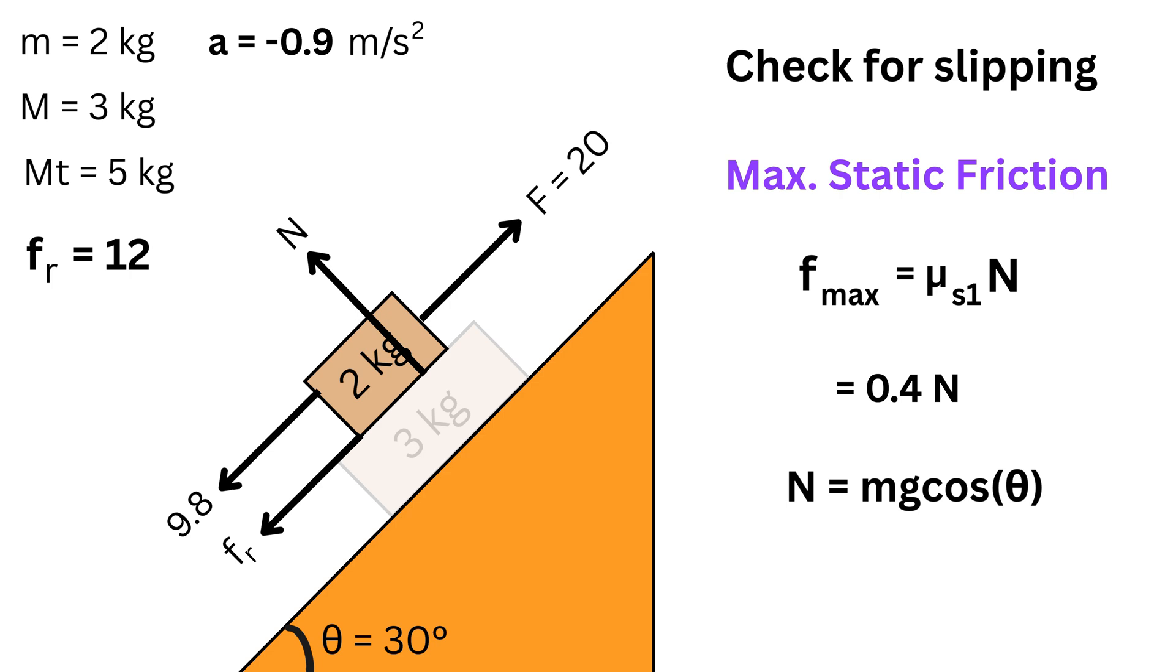We will only use the mass of the top block for this normal force calculation. This is because the normal force n represents how hard the two surfaces are pressing together, perpendicular to the incline. This force is solely caused by the component of the top block's weight, pushing down onto the bottom block, right? The mass of the bottom block, or 3 kilograms, does not press the two inner surfaces together.